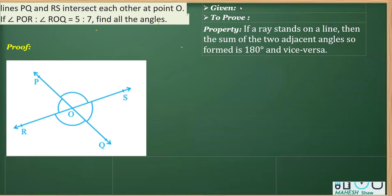We can say let POR be 5x and ROQ as 7x. We have to use a let statement for that. That is, let angle POR is equal to 5x and angle ROQ is equal to 7x.